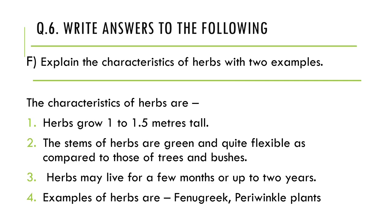The next question is: explain the characteristics of herbs with two examples. The characteristics of herbs are: first, herbs grow 1 to 1.5 meters tall — that is medium height. Second, the stem of herbs is green and flexible as compared to those of trees and bushes. Third, herbs may live for a few months or up to two years — so the lifespan is important. Fourth, examples of herbs are fenugreek, periwinkle plant, and rose plant.